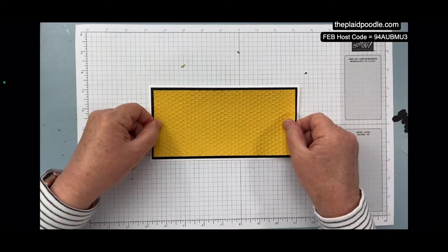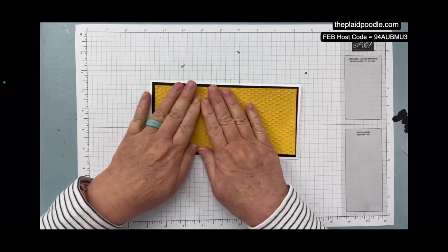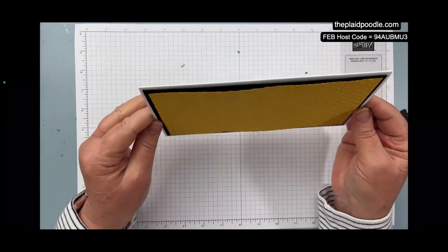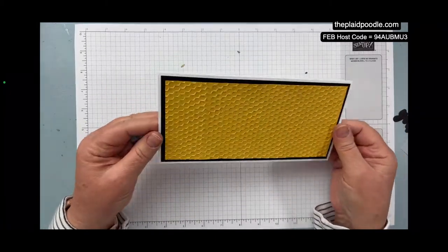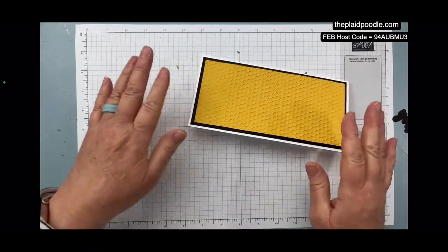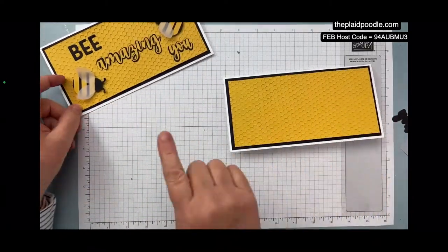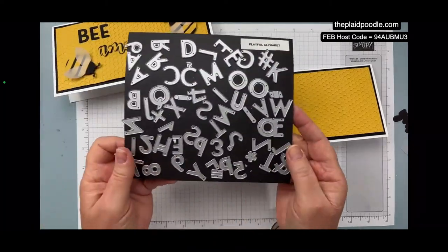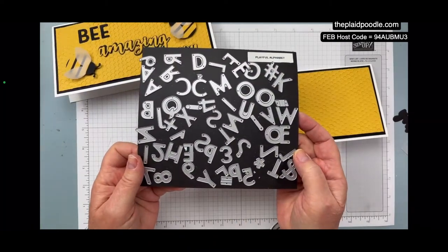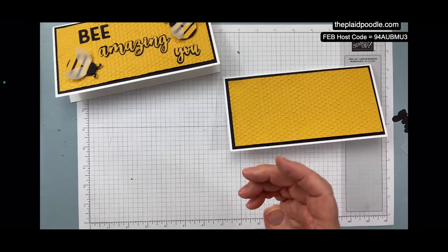I'm just going to stick this on here. And I'm kind of letting the edges curl up. I kind of liked that look, kind of looks a little dimensional. And then for the B, like I said, I used the letters from the Playful Alphabet dies.